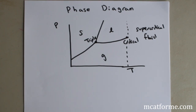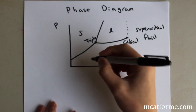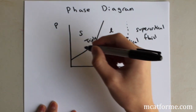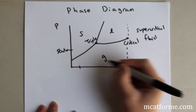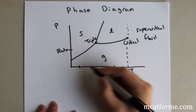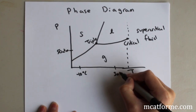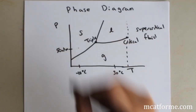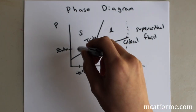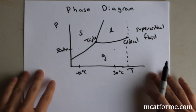A simple example: say you're at a pressure of 50 atmospheres and you go from negative 10 degrees Celsius all the way up to 30 degrees Celsius. What would the phase change be? We find 50 atmospheres at negative 10 degrees Celsius, keep a constant pressure, and change the temperature — so we went from solid to gas.